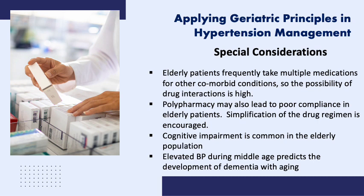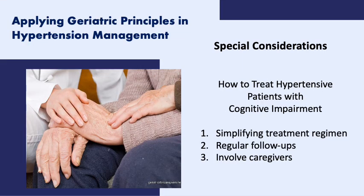Cognitive impairment is common in the elderly population. Hypertension has been implicated in the pathogenesis of cognitive impairment and dementia in the elderly. Elevated blood pressure during middle age predicts the development of dementia with aging. Furthermore, a high systolic blood pressure greater than 180 mmHg and a low diastolic blood pressure lower than 70 mmHg increases the risk of dementia in older adults. Antihypertensive treatment lowers the risk of dementia, as shown in the SYST-EUR study, where active treatment is associated with a 65% lower risk of dementia compared to placebo. In treating hypertensive patients with cognitive impairment, simplifying the treatment regimen, regular follow-ups, and involving caregivers are all part of optimal blood pressure management.